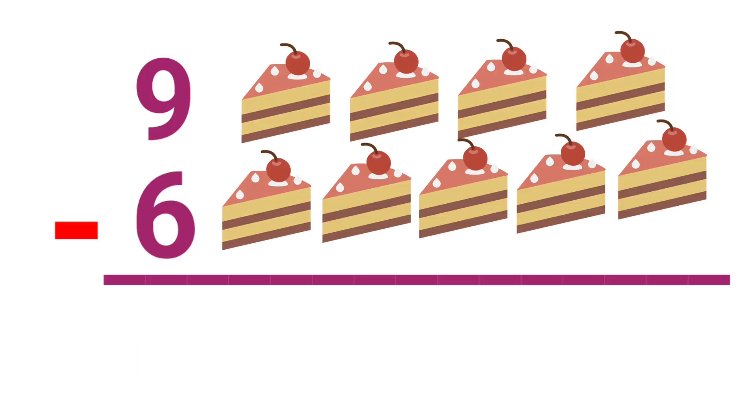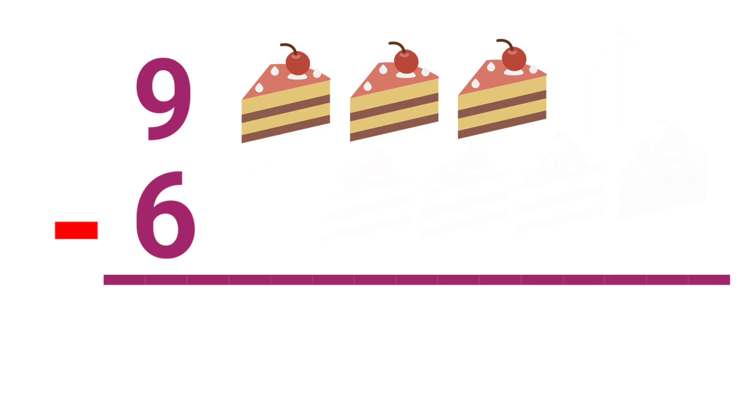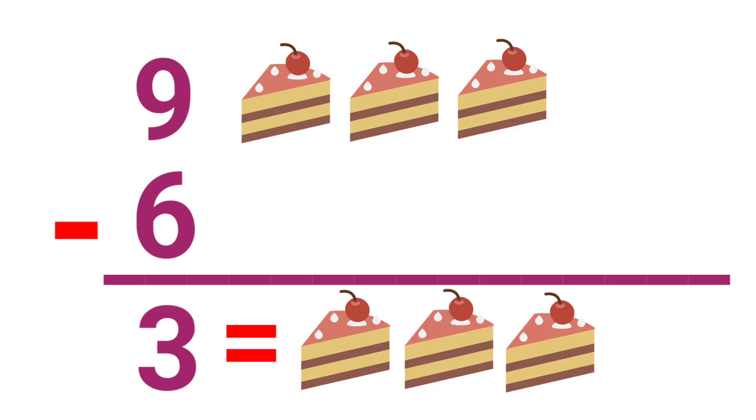Let's see another example. Here the sum is 9 minus 6. There are 9 slices of cake. Let's count the slices of cake. 1, 2, 3, 4, 5, 6, 7, 8, 9. In this 9 pieces of cake, a boy eat 6 pieces of cake. Remaining cakes are 3. So the answer is 3. 9 minus 6, the answer is 3.